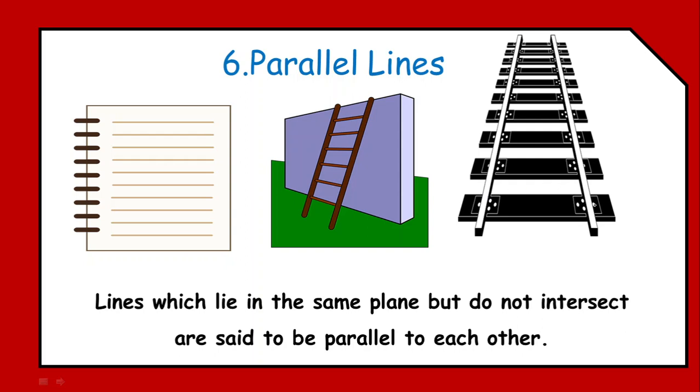They never intersect each other. Same is the case with the two arms of the ladder. And, same with the two tracks. So, what are these things? The two arms, two lines or the two tracks, they never cross each other. They never meet each other. So, in the similar fashion, the lines which are present on the same plane, but which do not intersect each other or which do not meet each other, they are said to be the parallel lines or parallel to each other.